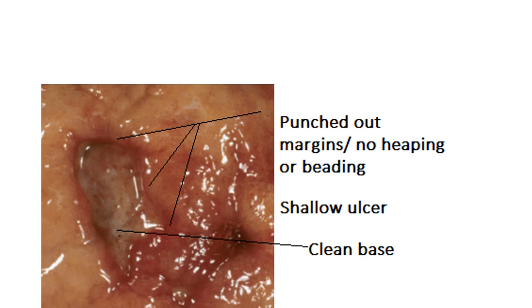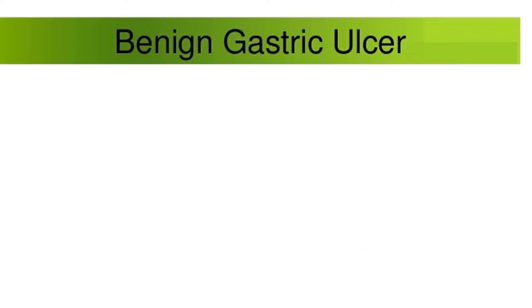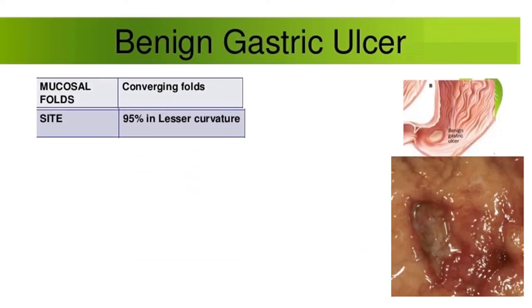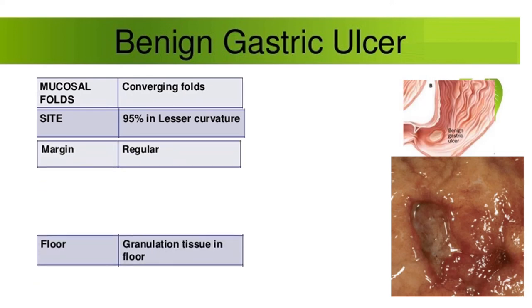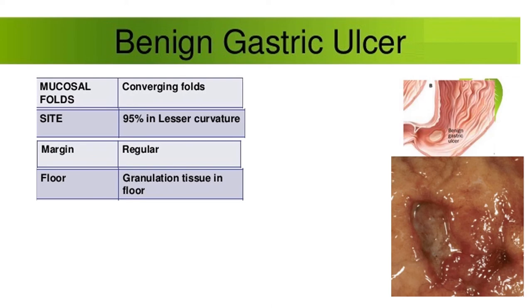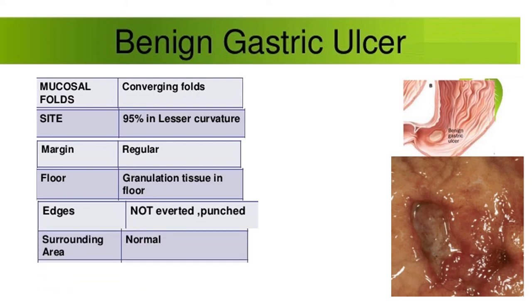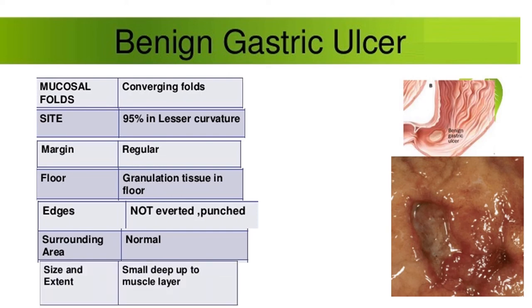In benign gastric ulcer, the margins are punched out and clean cut — no heaping or beading — and the ulcer is shallow with a clean base showing granulation tissue. Benign gastric ulcers usually occur along the lesser curvature. The mucosal folds are overhanging, margins are regular, the floor shows granulation tissue, edges are not elevated, and the surrounding area is normal with no malignant infiltration. The ulcer may be small but can extend deep to the muscle layer.